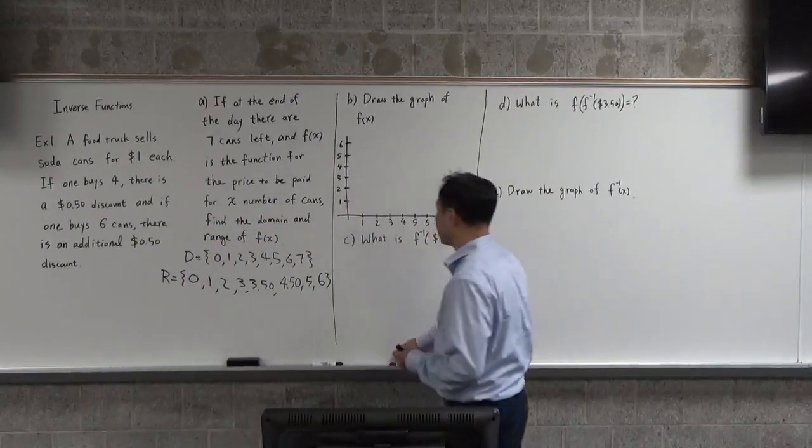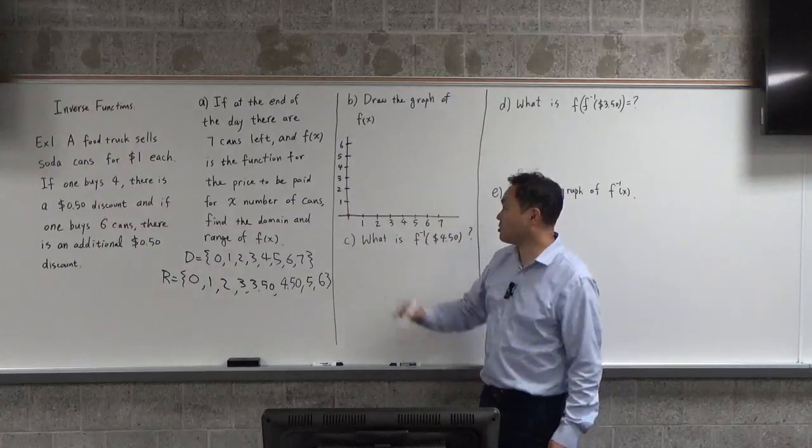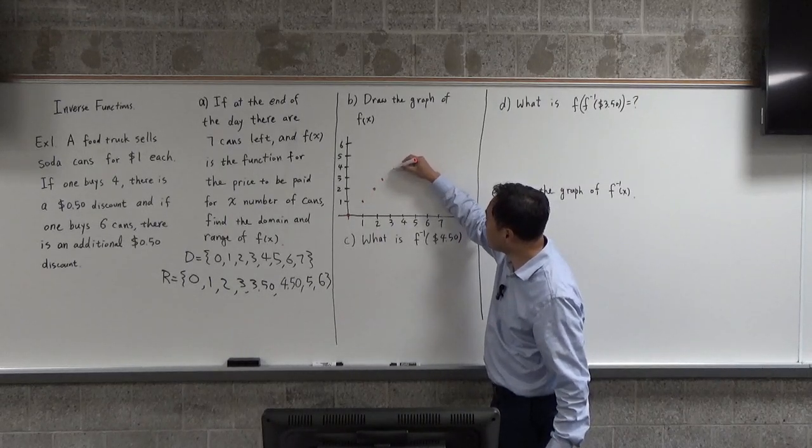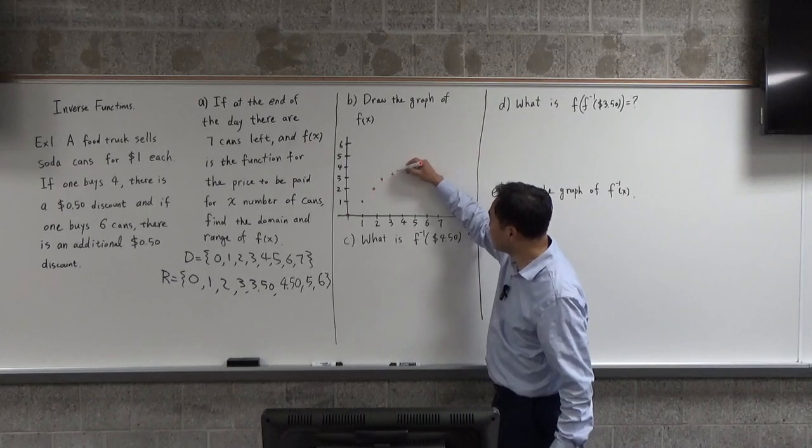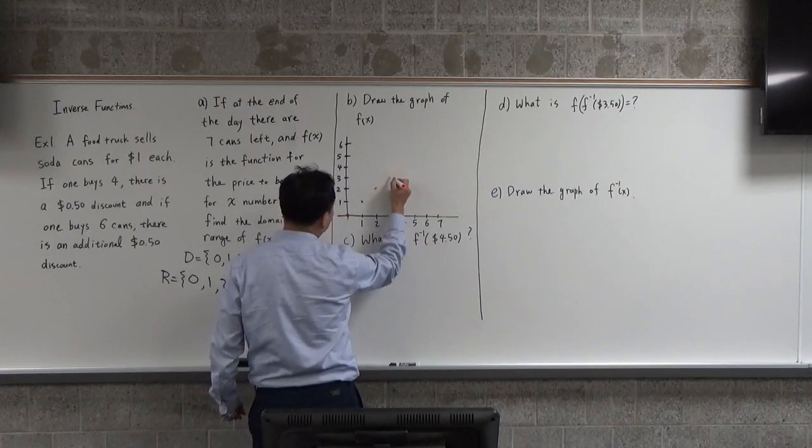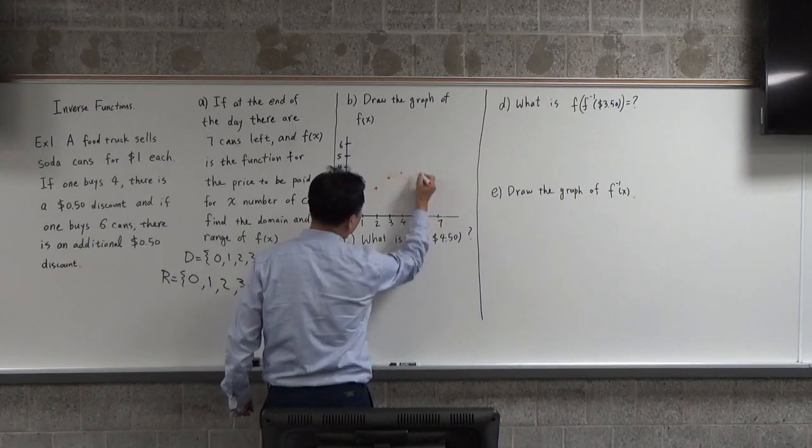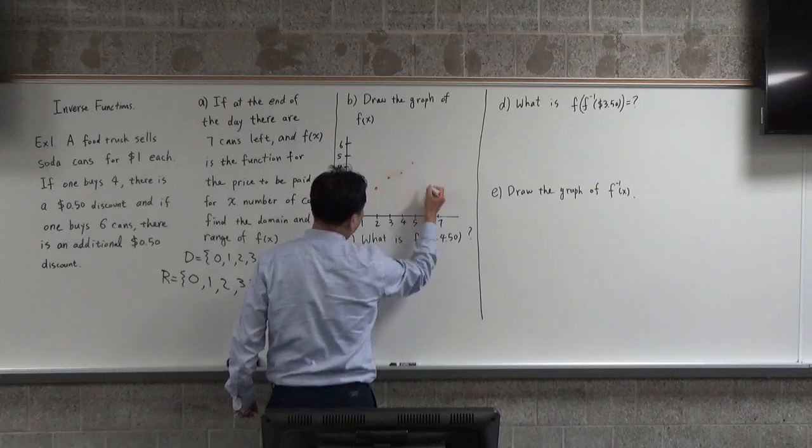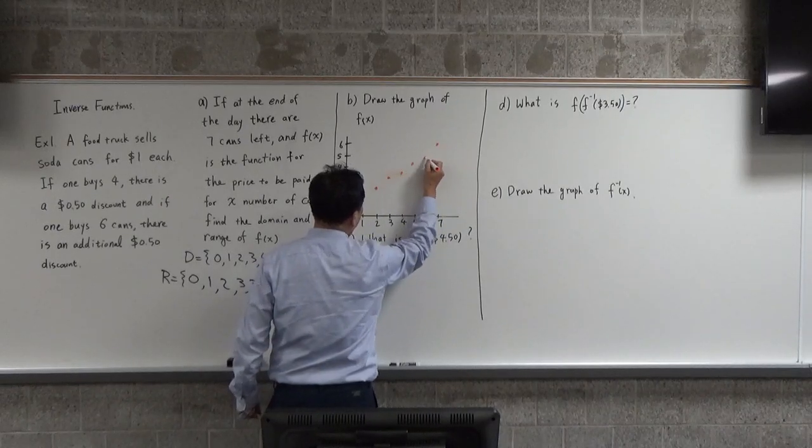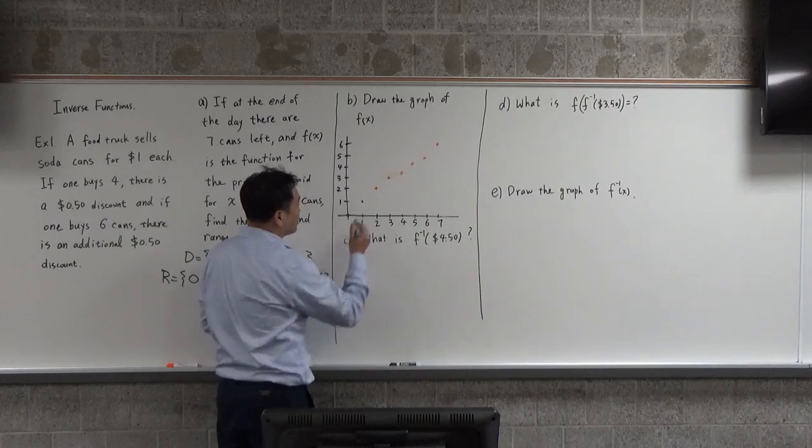Now start marking the points: (0,0), (1,1), (2,2), (3,3), and (4,3.5) - not 4, but down here at 3.5. I'm looking at it from the side so it doesn't look right from my angle. Let me adjust. These are the points; maybe I should make them slightly darker.